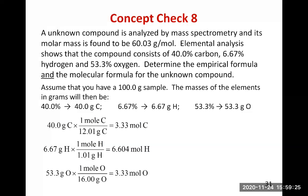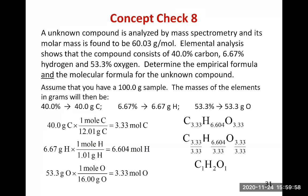The next step is to write the pseudo-formula with C subscript 3.33, H subscript 6.604, and O subscript 3.33. Then divide all subscripts by the smallest value, which is 3.33. So 3.33 divided by 3.33 gives a subscript of 1 for carbon and oxygen.